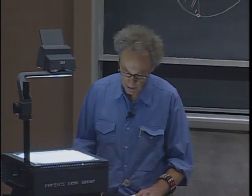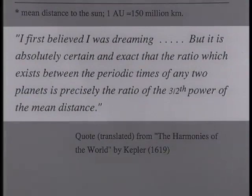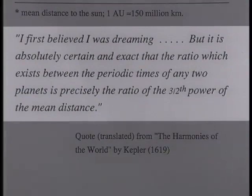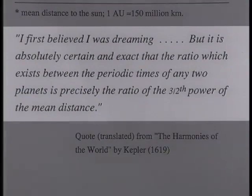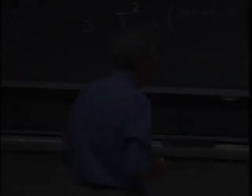His third law leads immediately to the inverse square dependence of gravity, which he was not aware of — Newton later put that all together. Kepler wrote jubilantly: 'I first believed I was dreaming, but it is absolutely certain and exact that the ratio between the periodic times of any two planets is precisely the ratio of the three-halves power of the mean distance.' He wrote that in 1619.